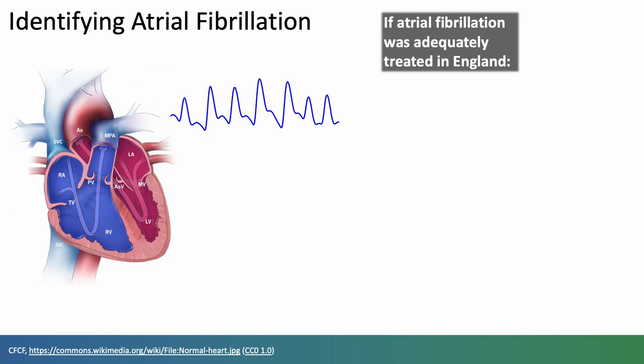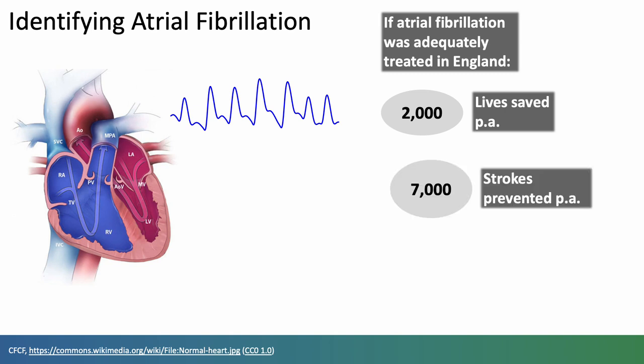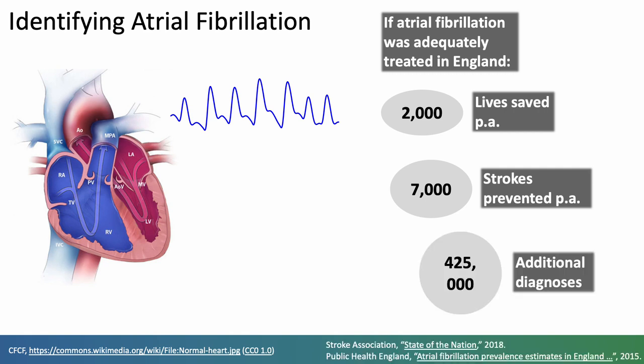It's believed that if atrial fibrillation AF was adequately treated in England then it would result in 2000 lives being saved per year, 7000 strokes being prevented, and 425,000 people would receive additional diagnoses of AF.